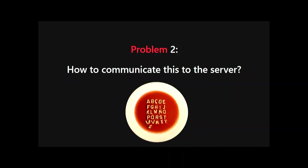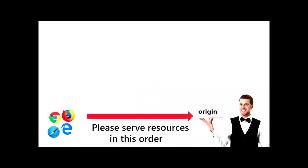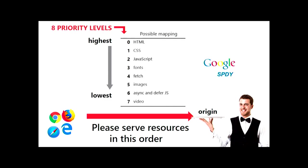And to understand that, we have to move to our second problem of the day: how do we actually communicate what the browser wants to our server? Again, sounds simple, can get complex. The easiest way — the original way from the Google SPDY protocol, the precursor to HTTP/2 — was very simple. It just said every resource gets one integer, a priority level or a priority bucket. The server can just go down these buckets in order for serving the resources. Very simple to set up, works quite well in practice, but there are some problems.